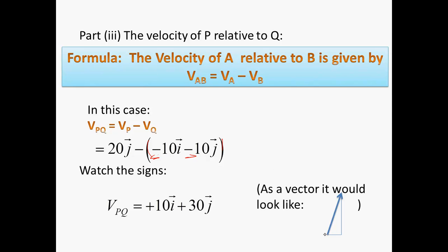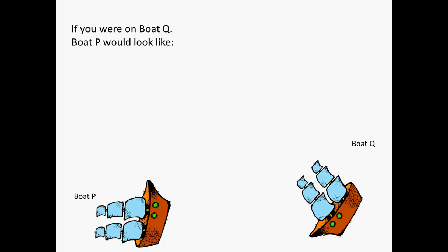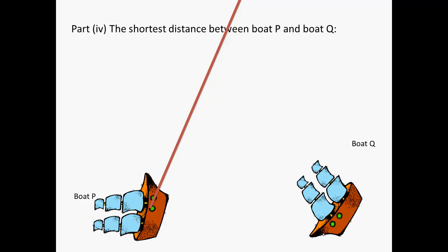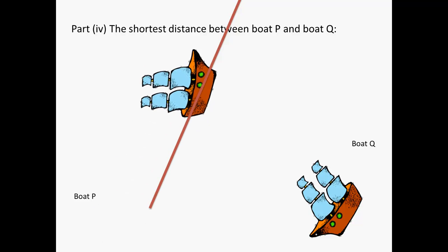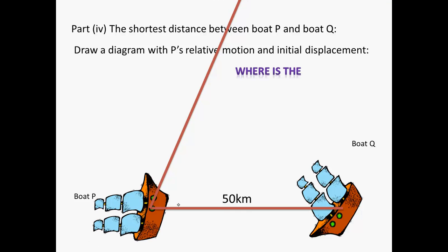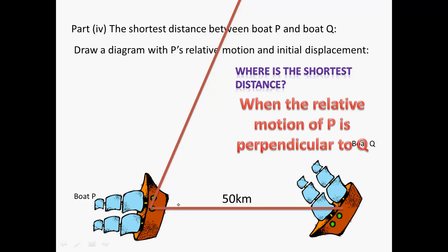Okay. The vector would look like that. So, if you were on boat Q, boat P would look like it was travelling like that. Makes sense. So, we have to find the shortest distance between boat P and Q. Now, we've got this line of path here. So, we know they initially start off 50 kilometres due west of boat Q. So, where's the shortest distance? When the relative motion of P is perpendicular to Q.